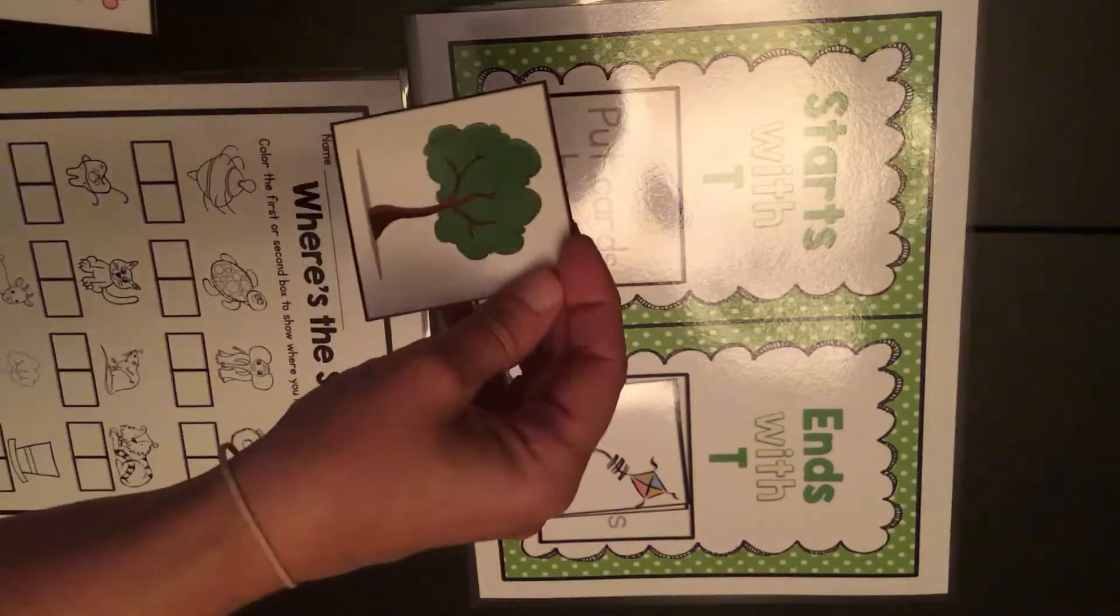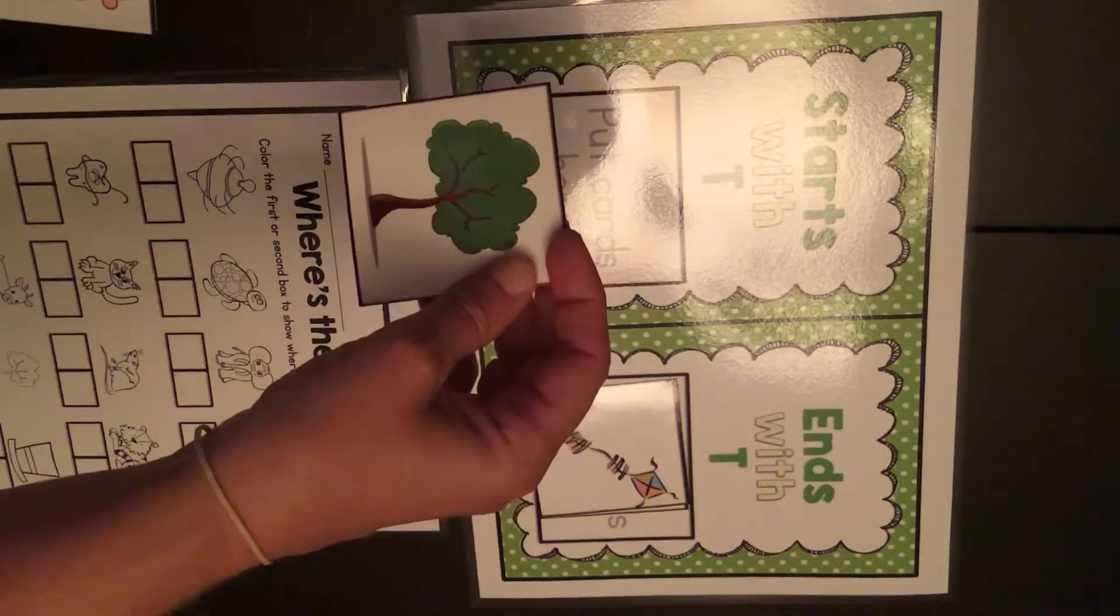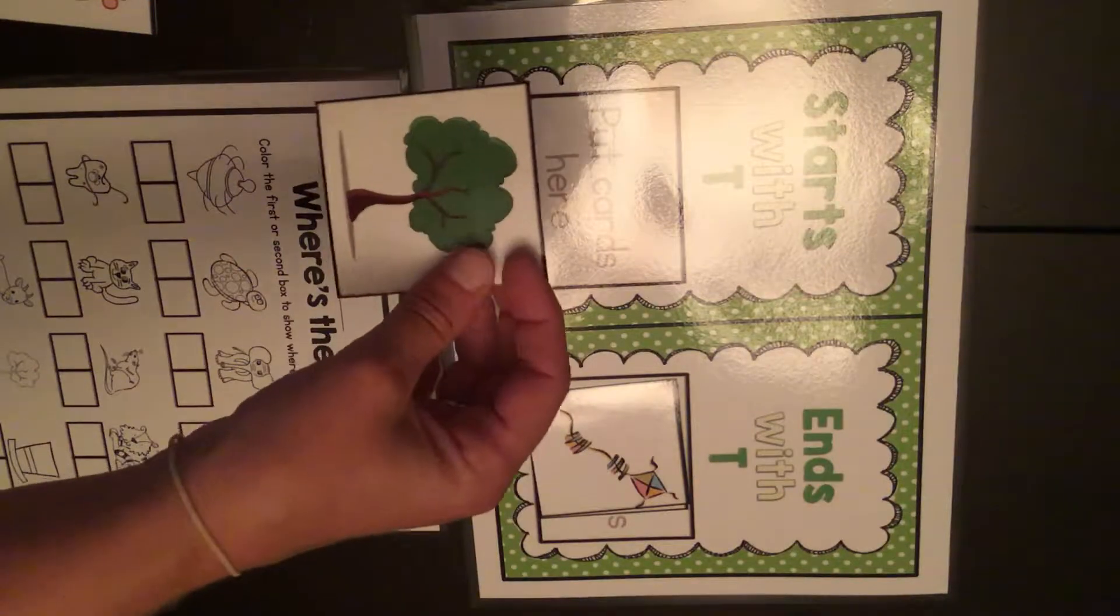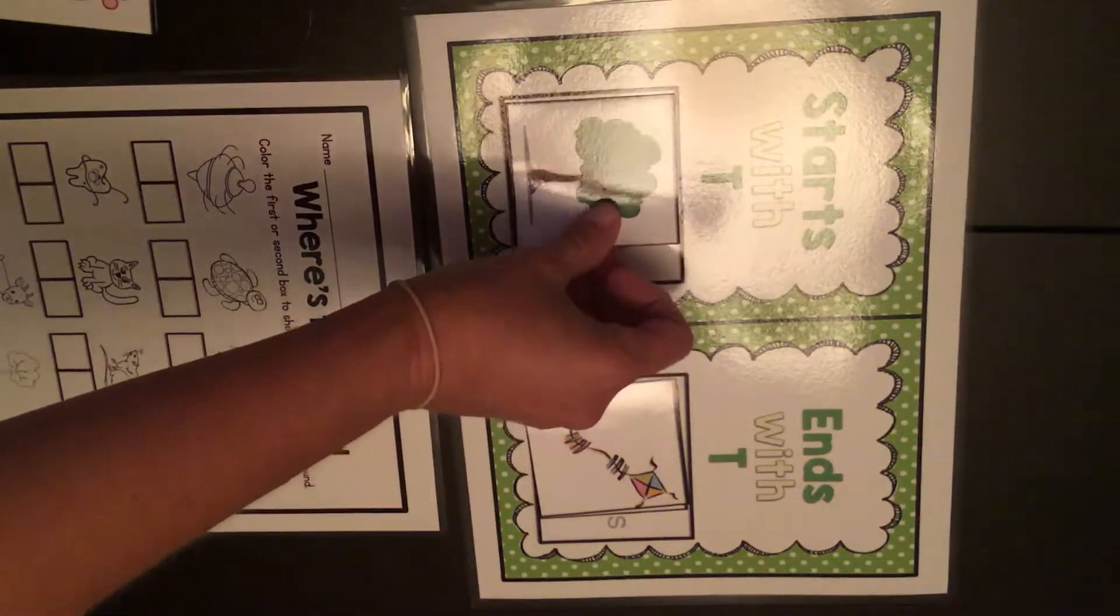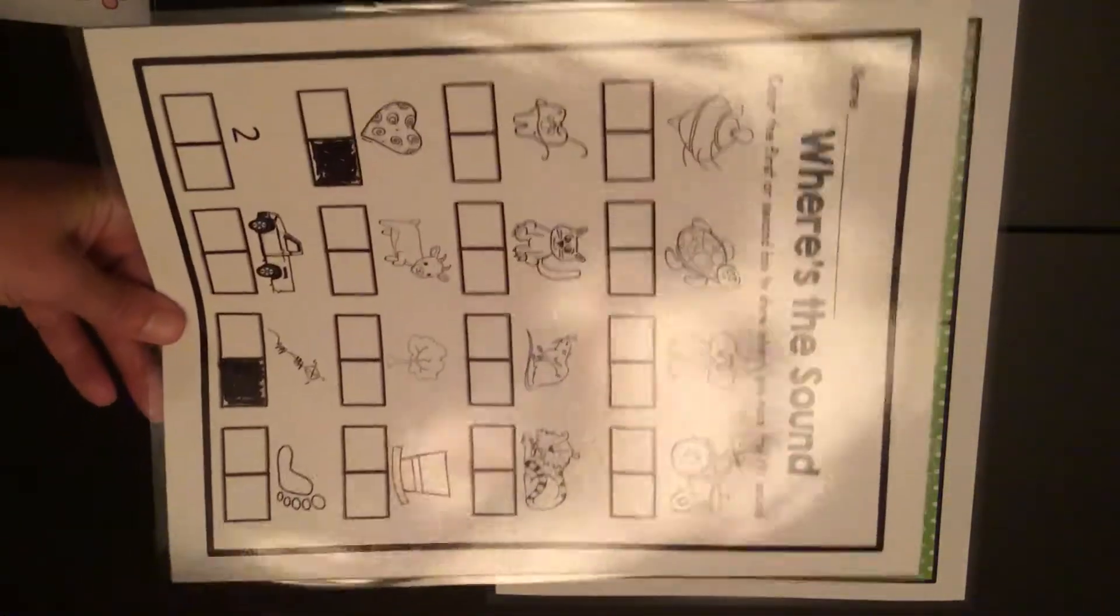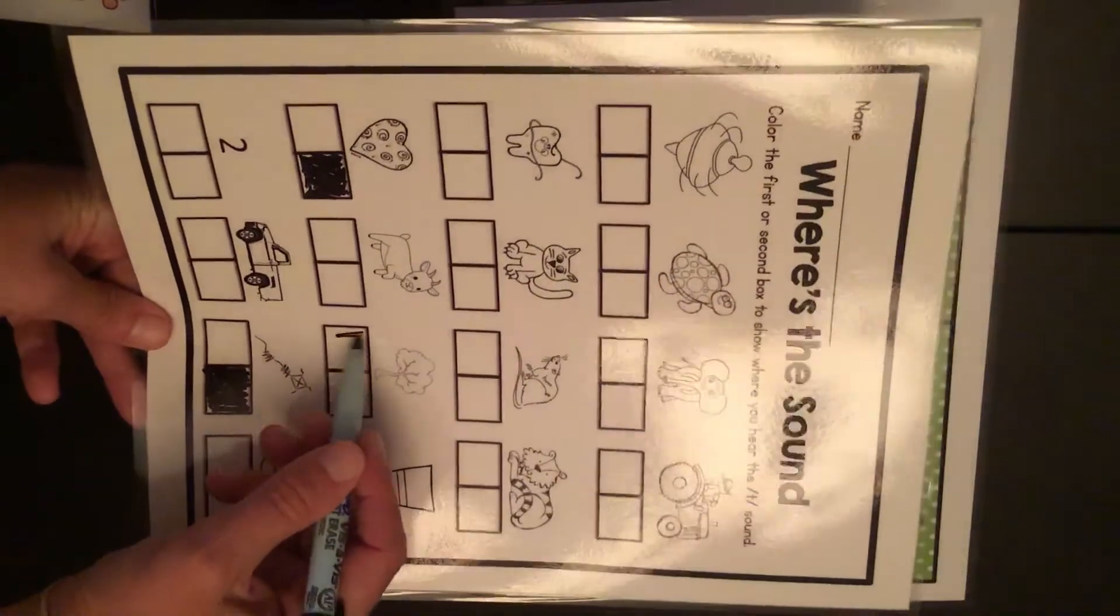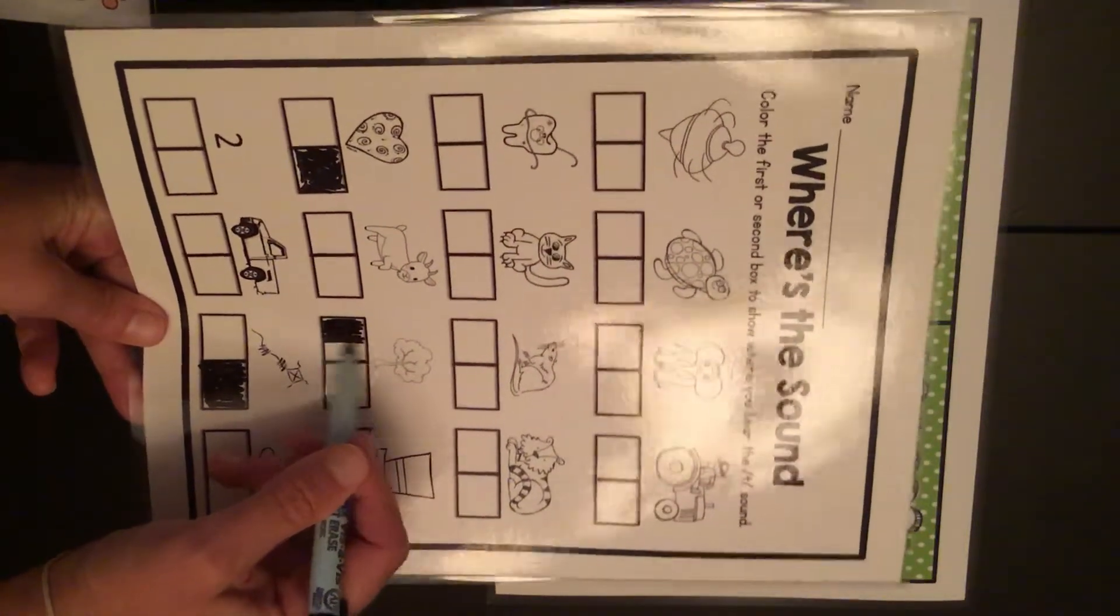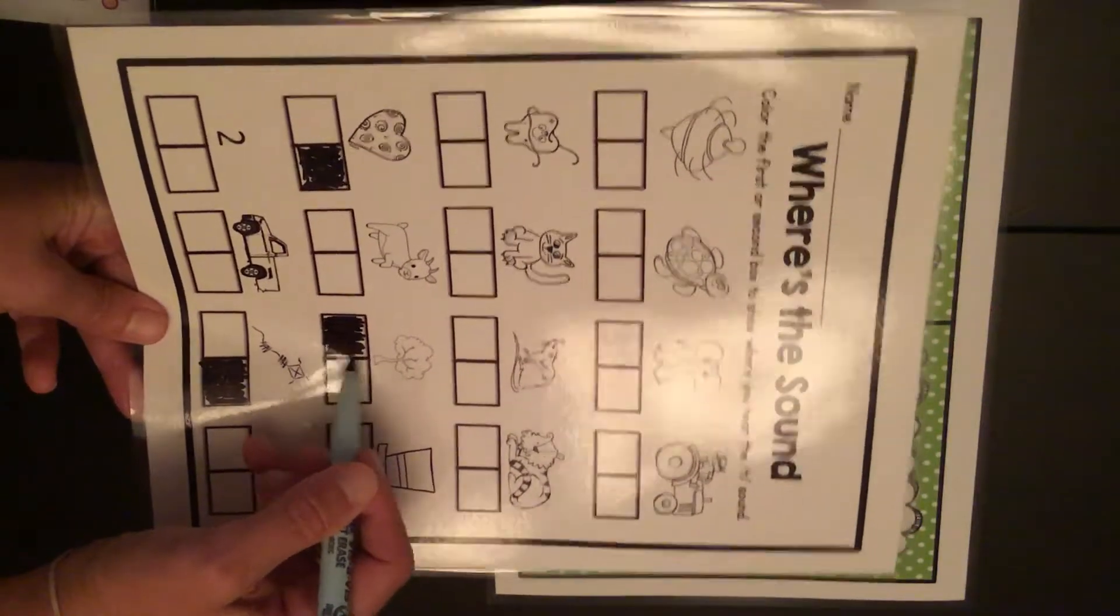Here I see a picture of a tree. T, t, tree. Tree starts with T. So I put it there. And I find the picture of the tree on here. It's right here. And I'm going to color the first box because the first sound goes T, t. Not the last sound.